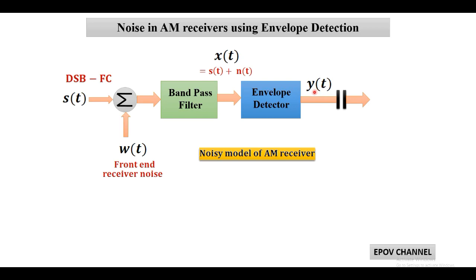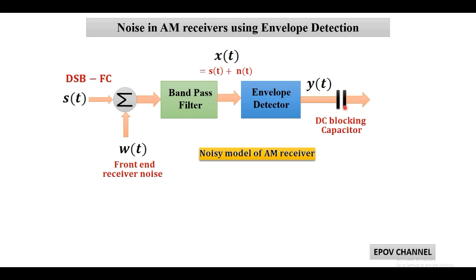The output of the envelope detector may contain some DC component. Hence, there is a requirement of a blocking capacitor as shown in the figure, and the result is output Y₀ as the scaled version of the message signal and noise.